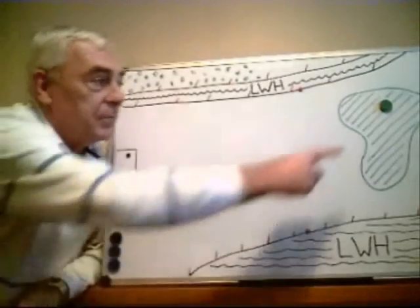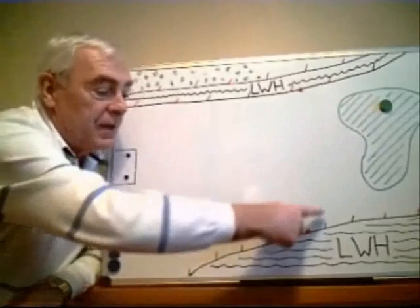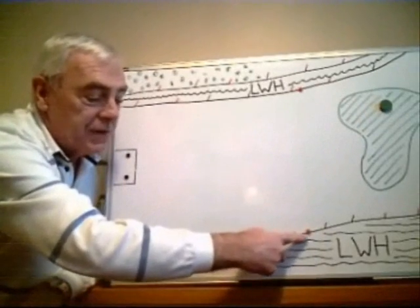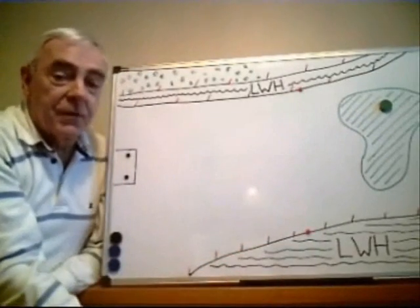It's not possible for a player to drop a ball on a line from the flagstick through where their ball crosses the margin of the hazard because they would be off the course.